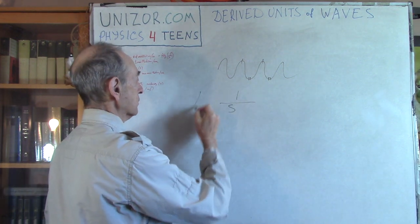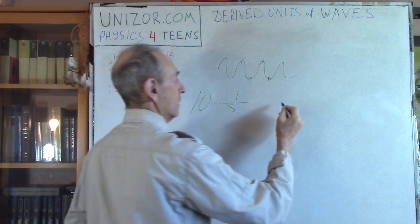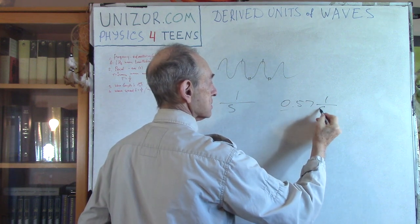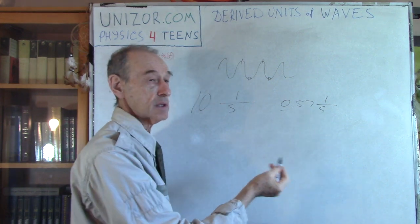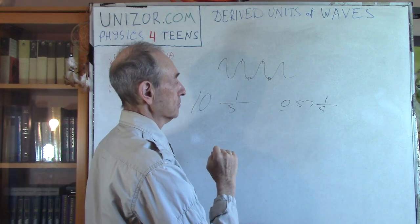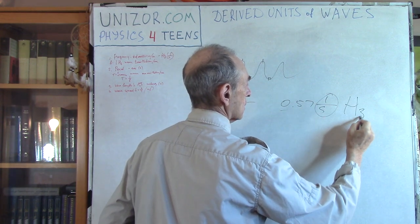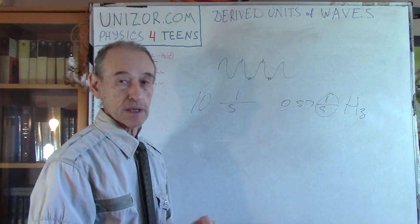So if you have 10 of this, it means 10 oscillations per second. If you have 0.57, it means 0.57 oscillations per second. Per second, that's why second is in the denominator. Now this unit is called Hertz. Obviously in honor of the scientist by the name Hertz.